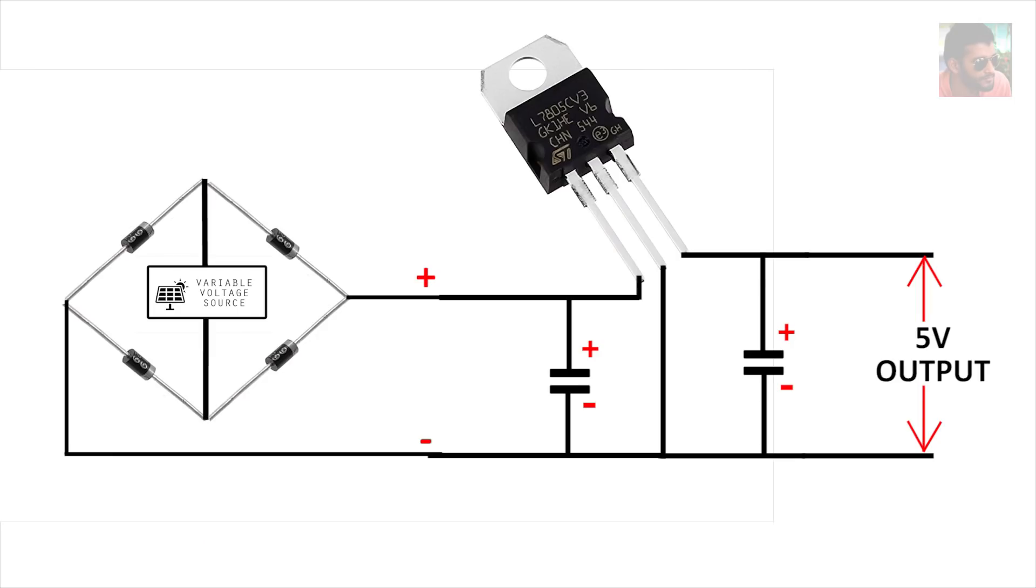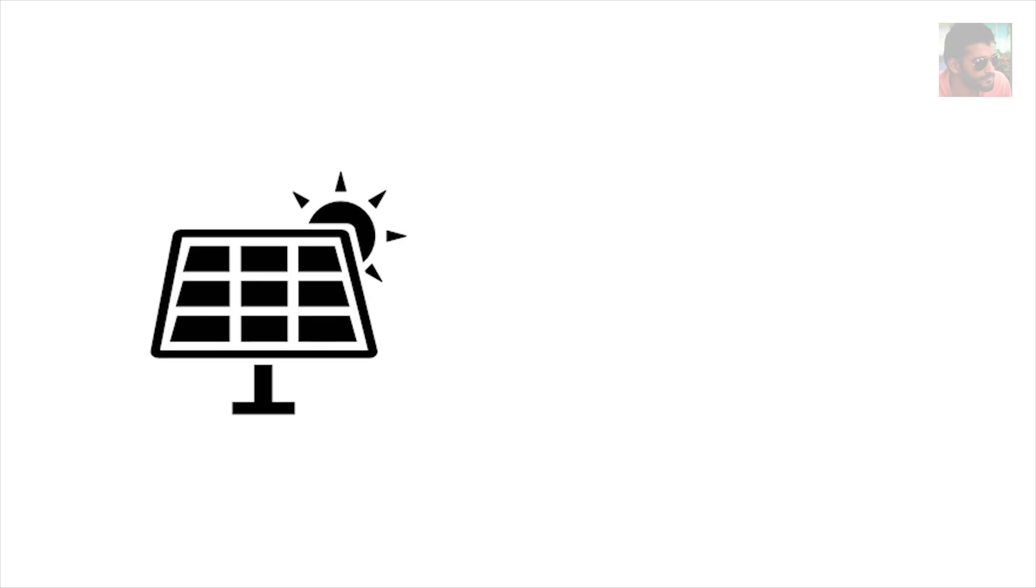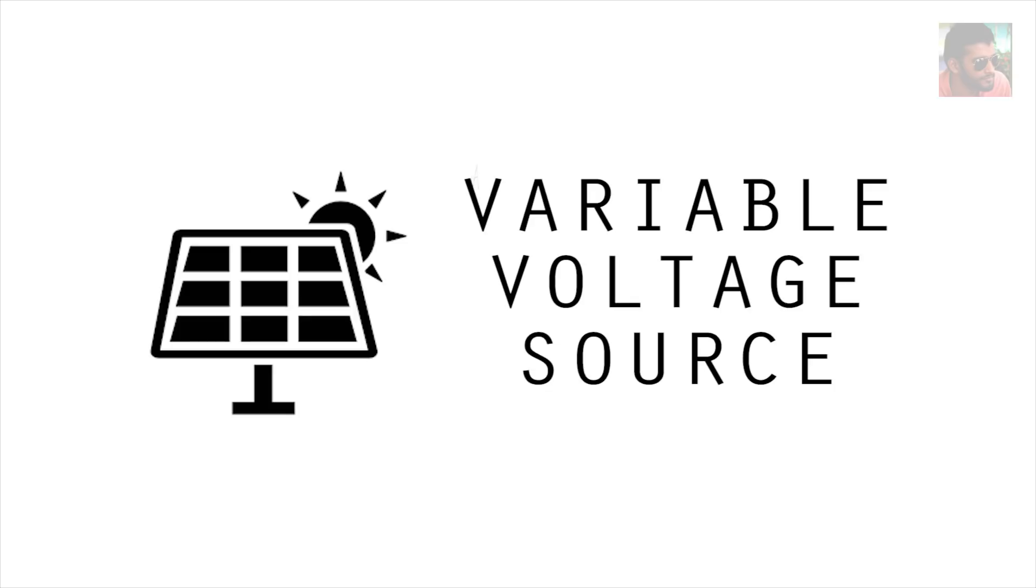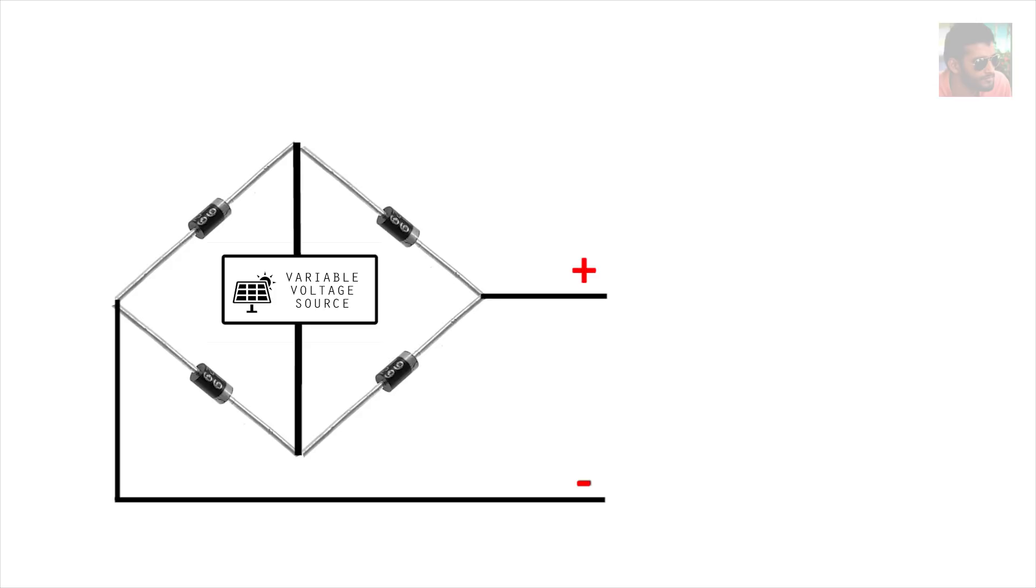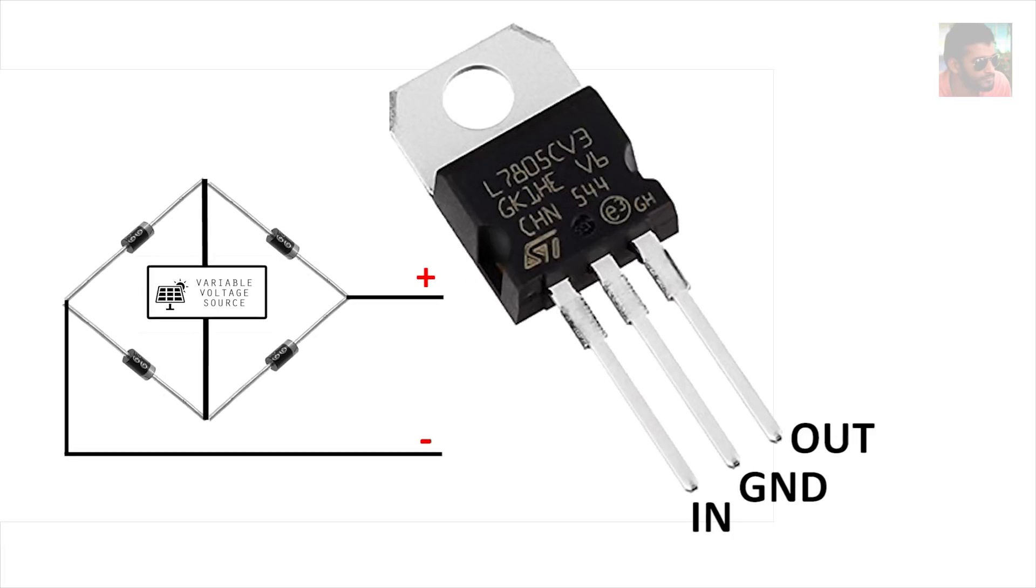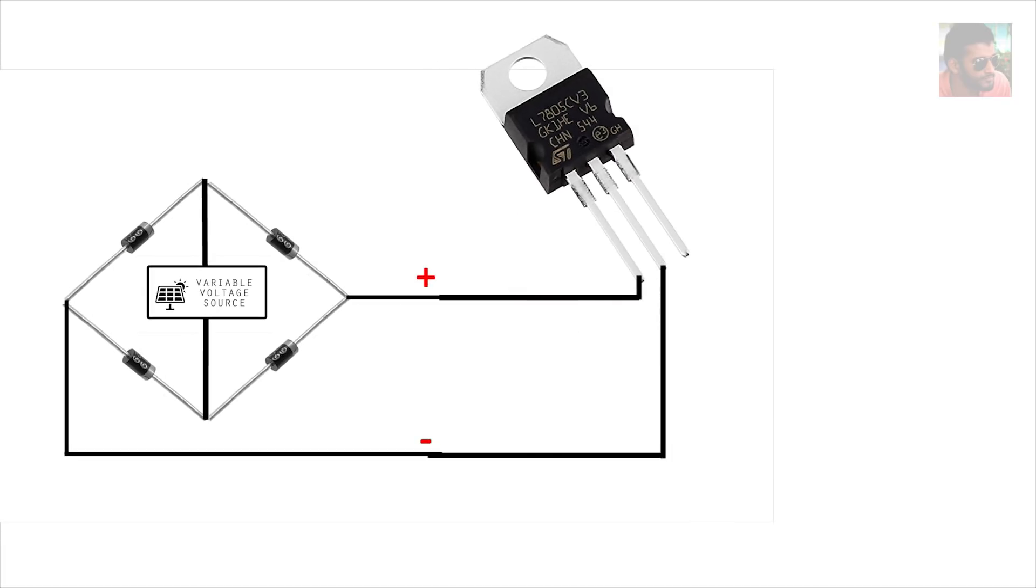This is the circuit diagram to make a simple voltage regulating circuit. Here this is my solar panel, it is the variable voltage source. Then I have diode arrangement like this. These two terminals connected to the regulator input and ground terminals. And I connect two capacitors like these, each of 10 microfarads and 25 volts. Then I get my regulated 5 volt output here which is suitable to charge your mobile.